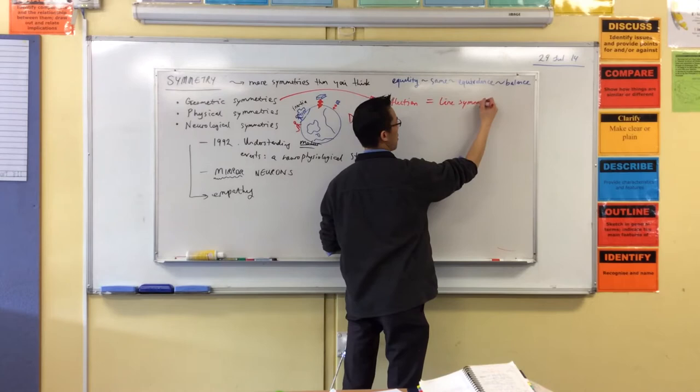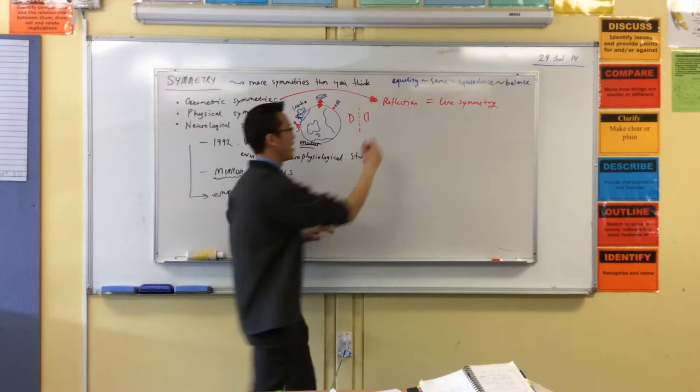So, we often call this line symmetry. Hopefully, that's a bit old from... You've learned this before. Now, rotation, it has a similar name to line symmetry. Does anyone know what it is?